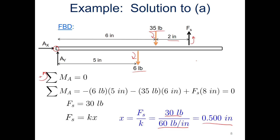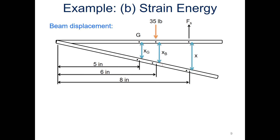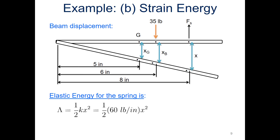Now let's look at the minimum total potential energy approach with the same setup. The elastic strain energy for the spring is one half k·x squared, where k is 60 pounds per inch. The trick is relating the displacement x at the spring to the displacements x_G and x_B at the load application points. We use similar triangles: the spring is at eight inches, point G at five inches, and point B at six inches from the pivot.